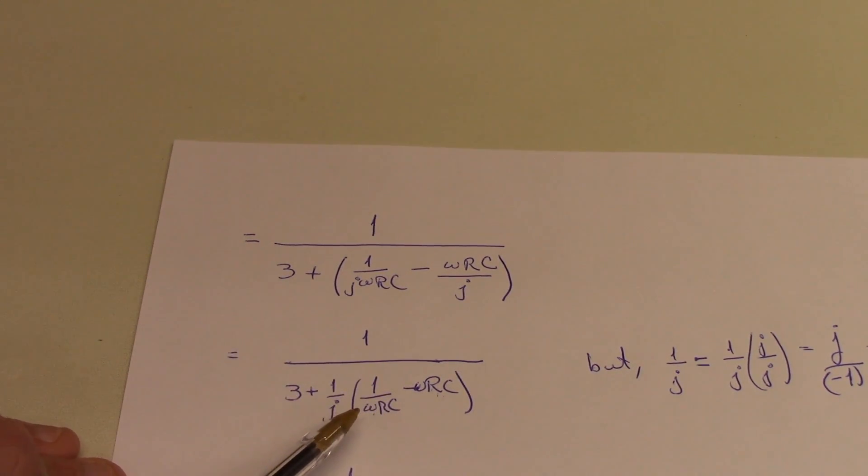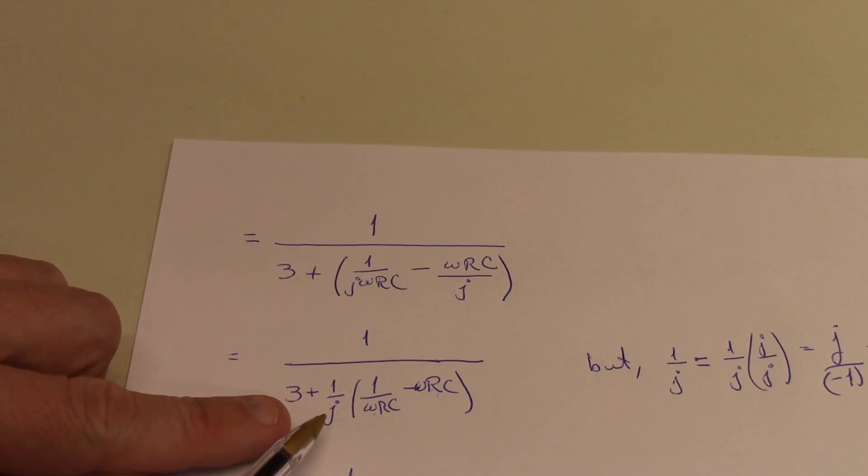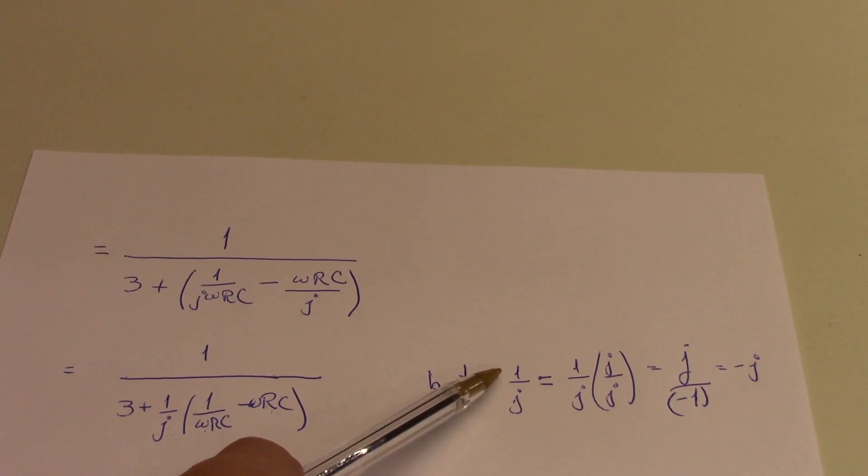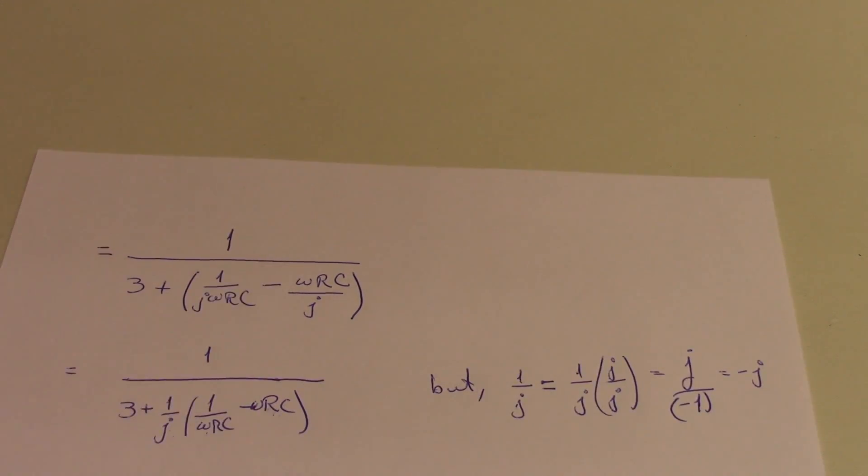But, just following it through to the gory end, I can make it look exactly like the expression that I wrote by noting that 1 over j is just minus j. And if you don't remember that, you can always work it out.